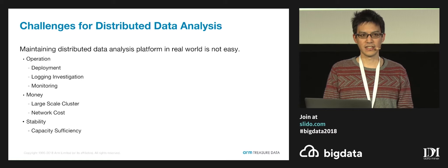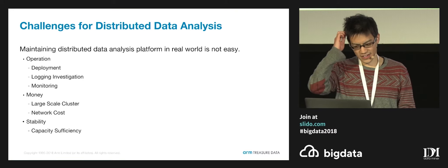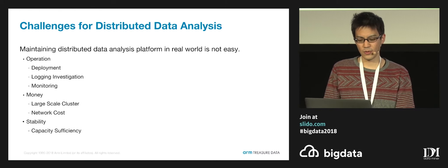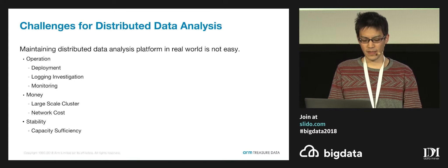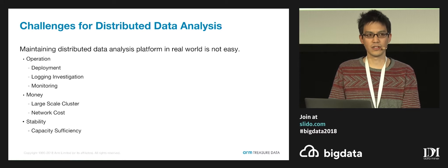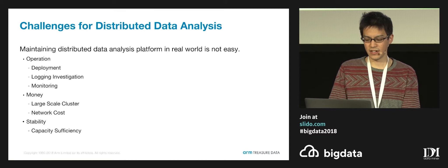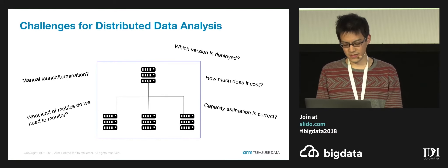And money. In order to process large-scale datasets, we need to add more instances. But public cloud services are pay-on-demand, so we need to pay more money when we add more instances. We want to save our cost as much as possible. And even while keeping our cost low, we also need to achieve high stability to avoid customer dissatisfaction, so that they can process their workload within a specific time range.